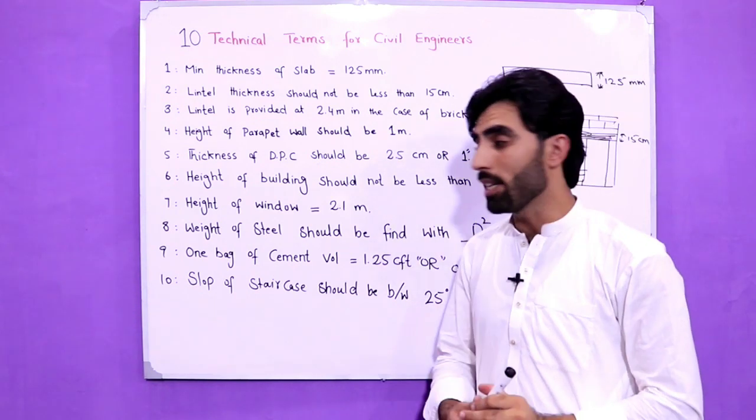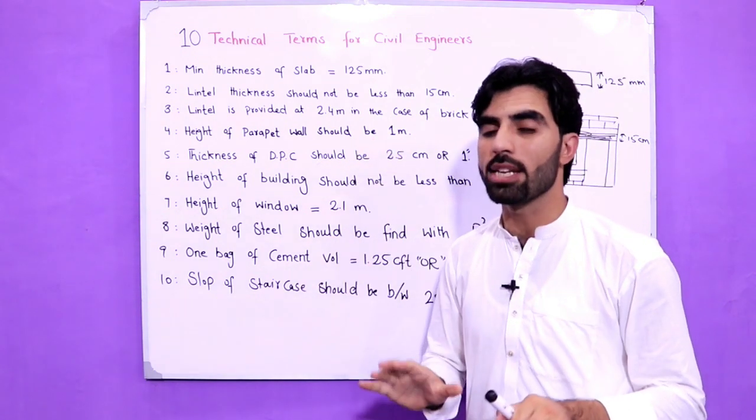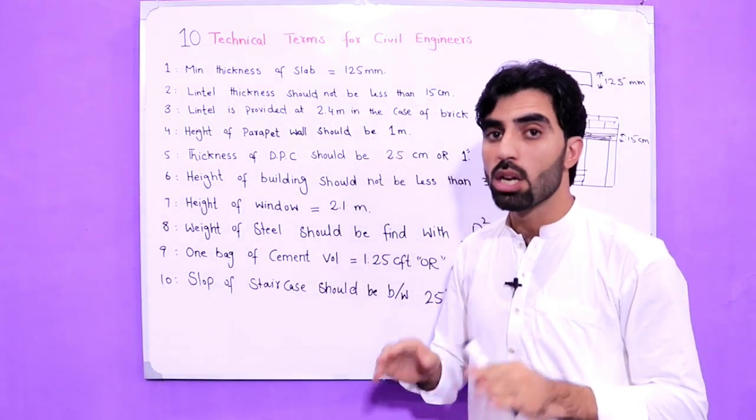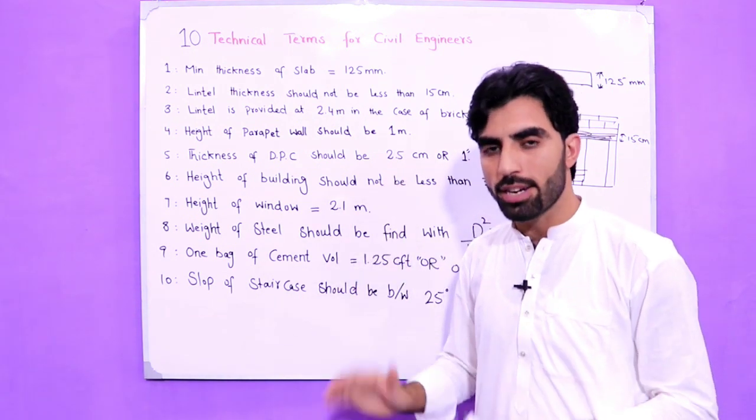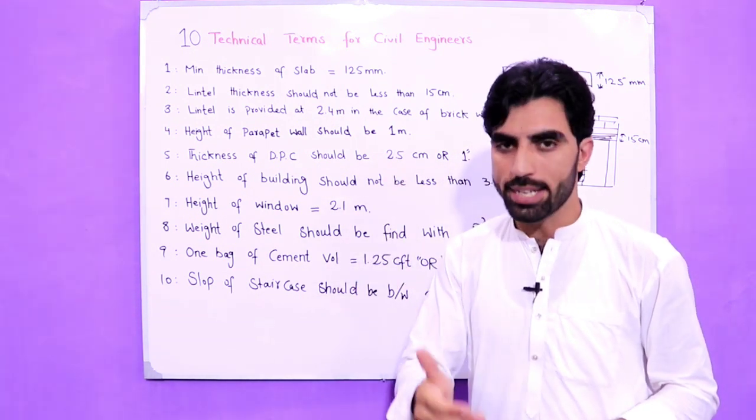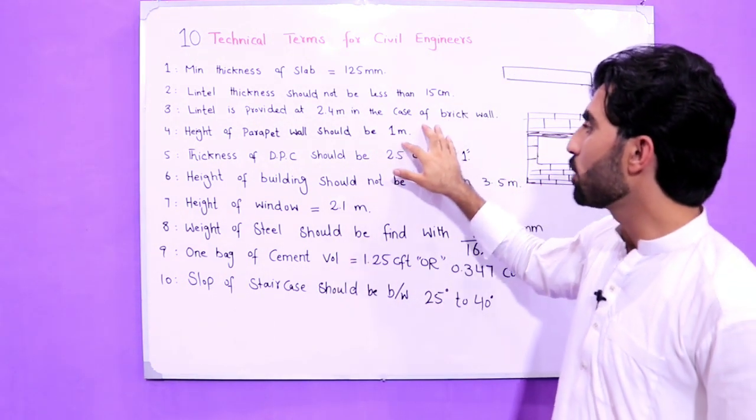The fourth point is height of parapet wall should be 1 meter. It should not be less than 1 meter. These are very helpful for you people if you are working on construction site or if you are an architect. It's very important for architects - parapet wall height should not be less than 1 meter.